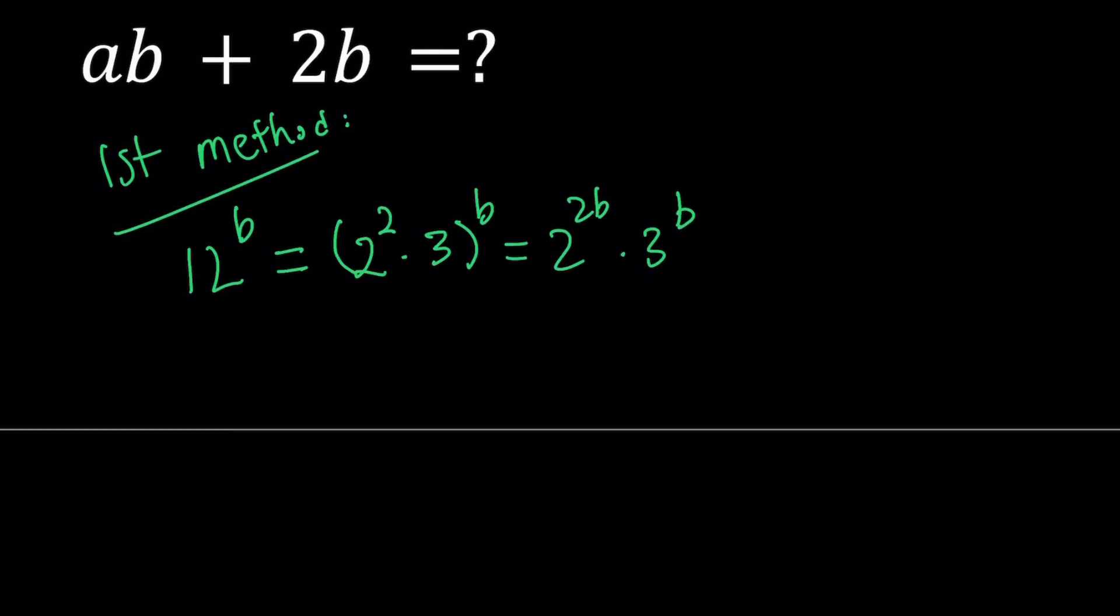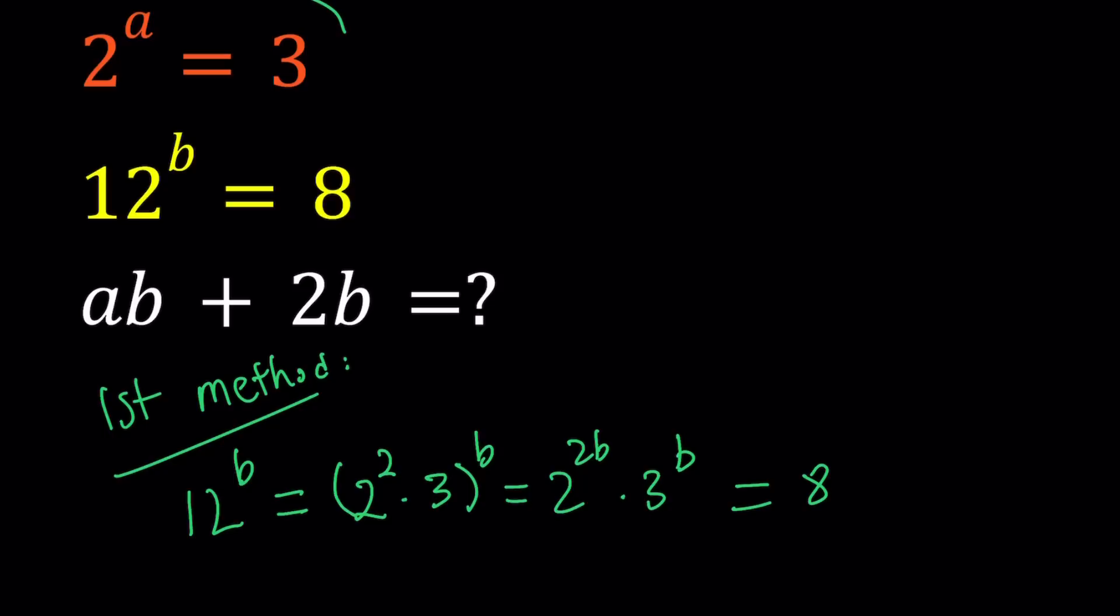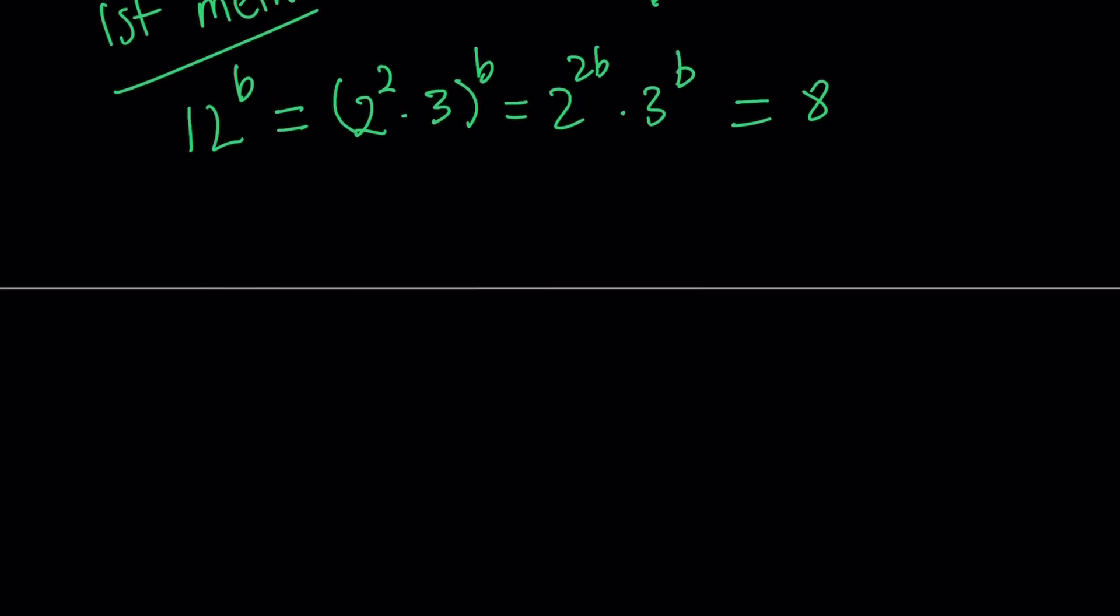Now we know that this is equal to 8 so let's go ahead and set it equal to 8. Now one thing we can use here is we know that 2 to the power a is equal to 3. So we can go ahead and substitute that here. Let's go ahead and do it. Replace 3 with 2 to the power a and then raise it to the power b equals 8.